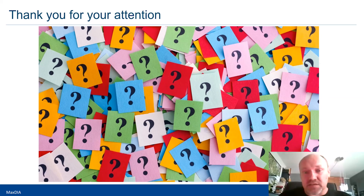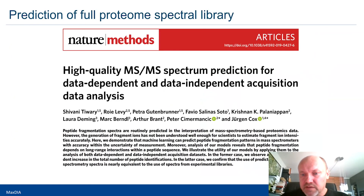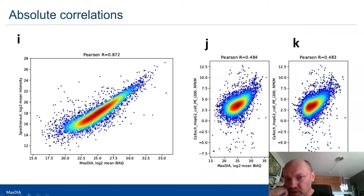No — that was exactly my point. In the MaxDIA iBAQ against HCT116 RPKM plot it's really smooth — there is no extra population. In the Spectronaut intensities against RPKM plot, you see this extra population.